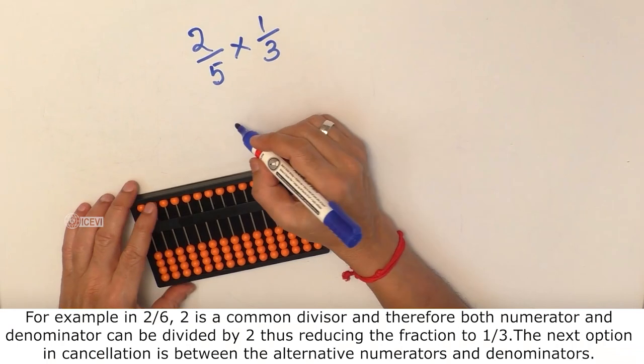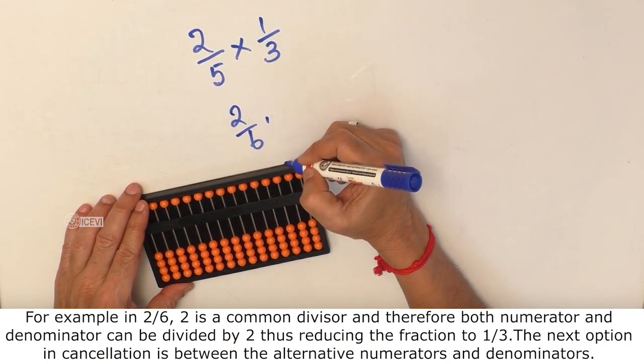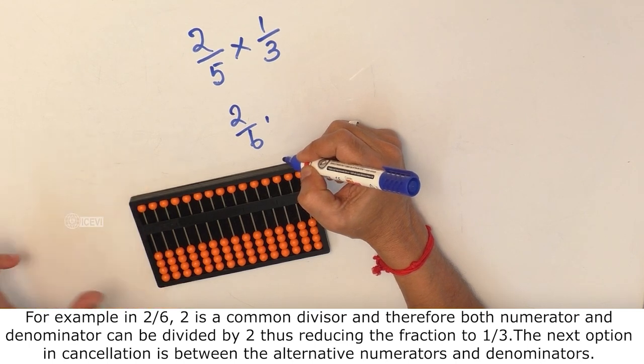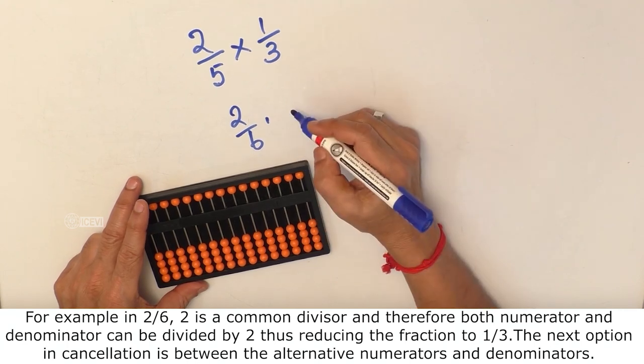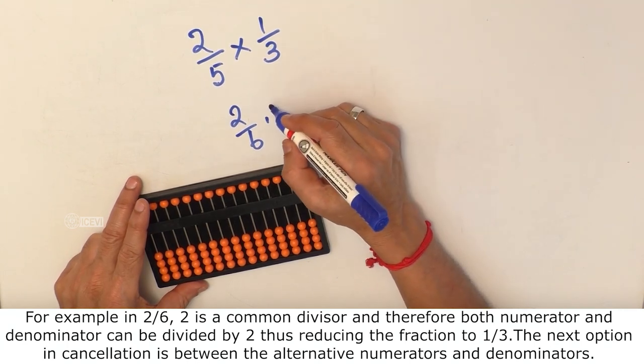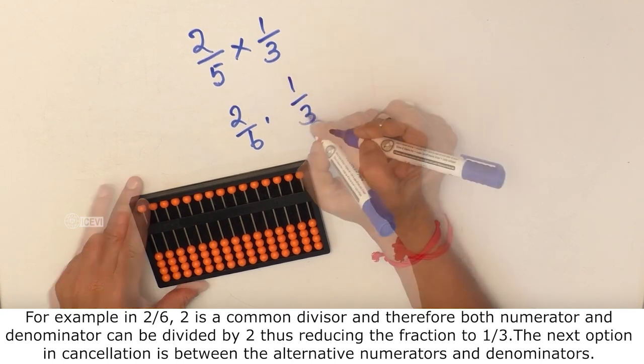Both numerator and denominator of the particular fraction may be reduced to a smaller number by using a common divisor to divide both. For example, in 2 by 6, 2 is a common divisor. And therefore, both numerator and denominator can be divided by 2, therefore reducing the fraction to 1 by 3.